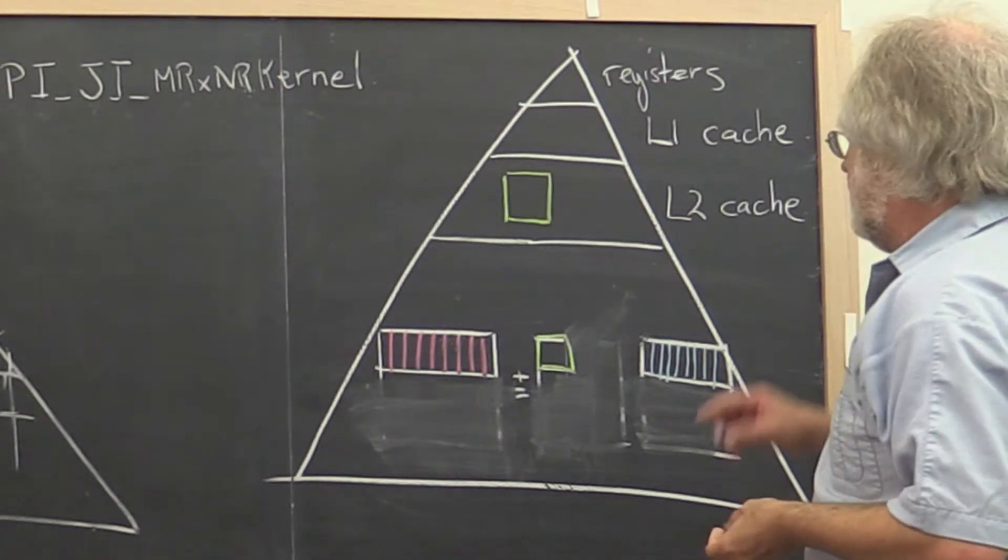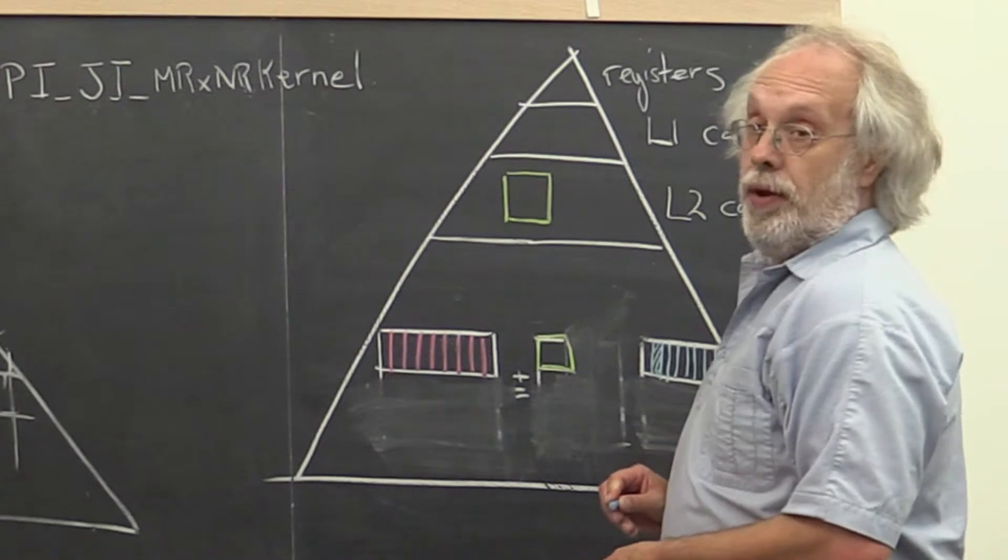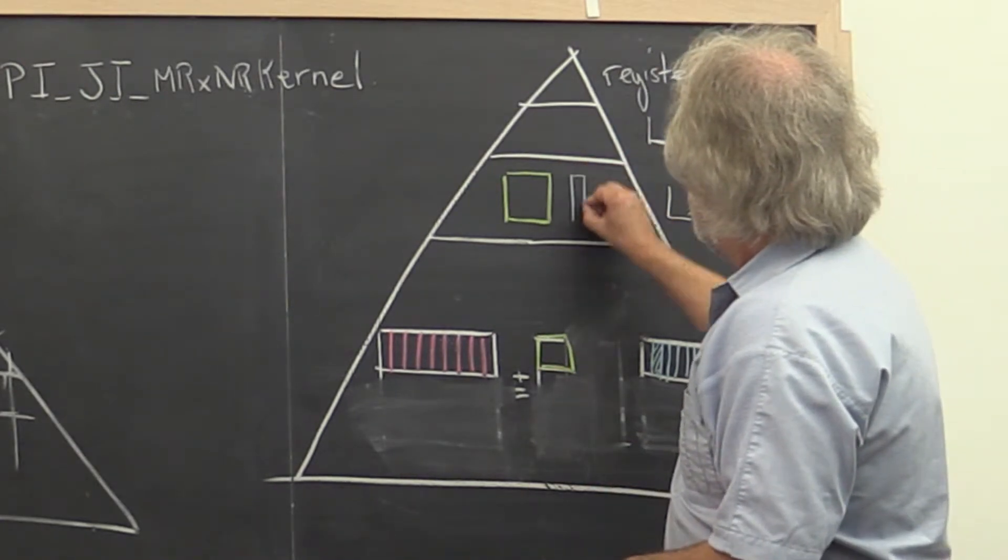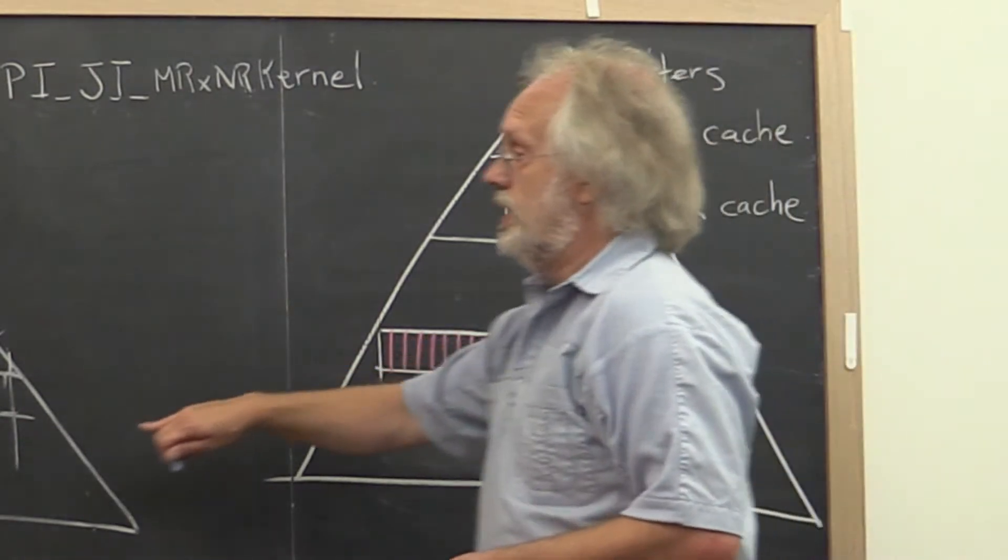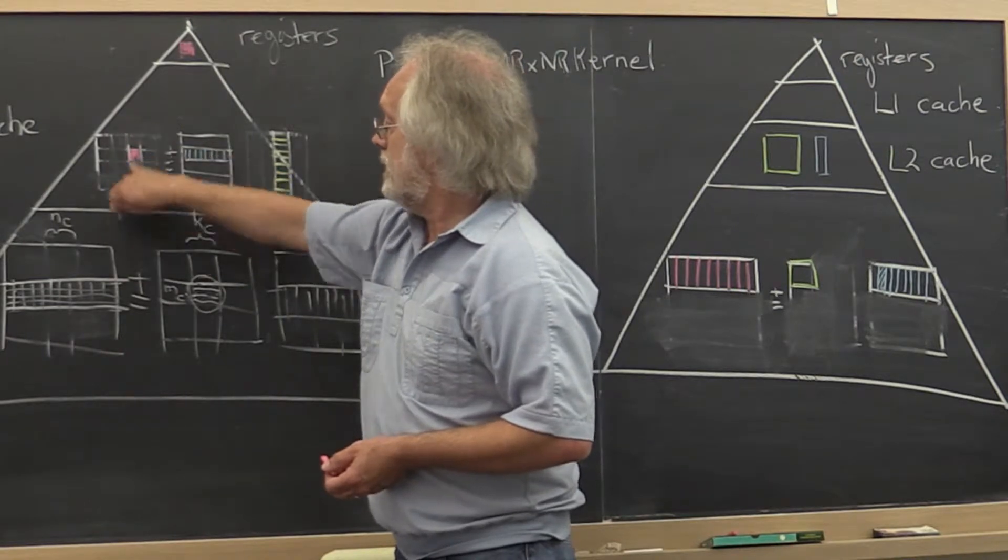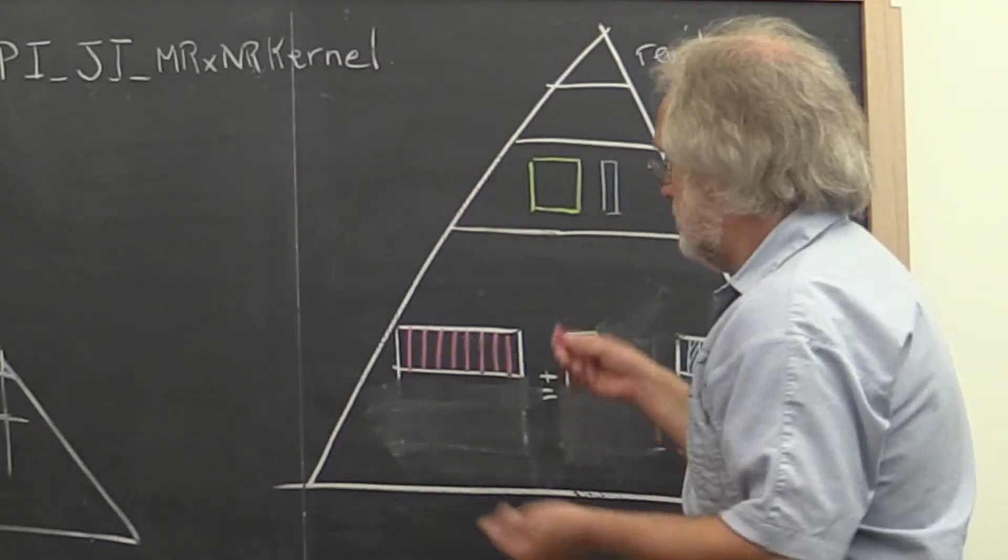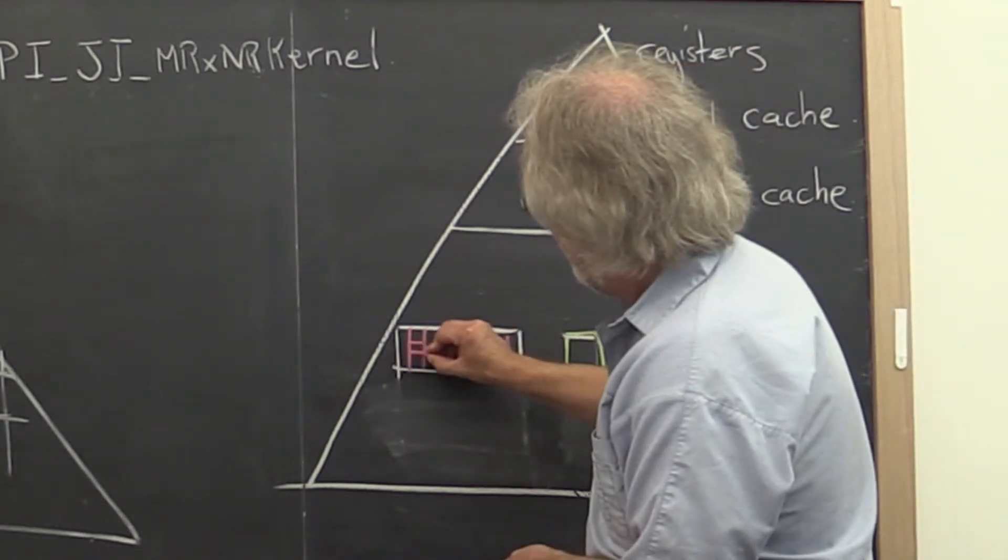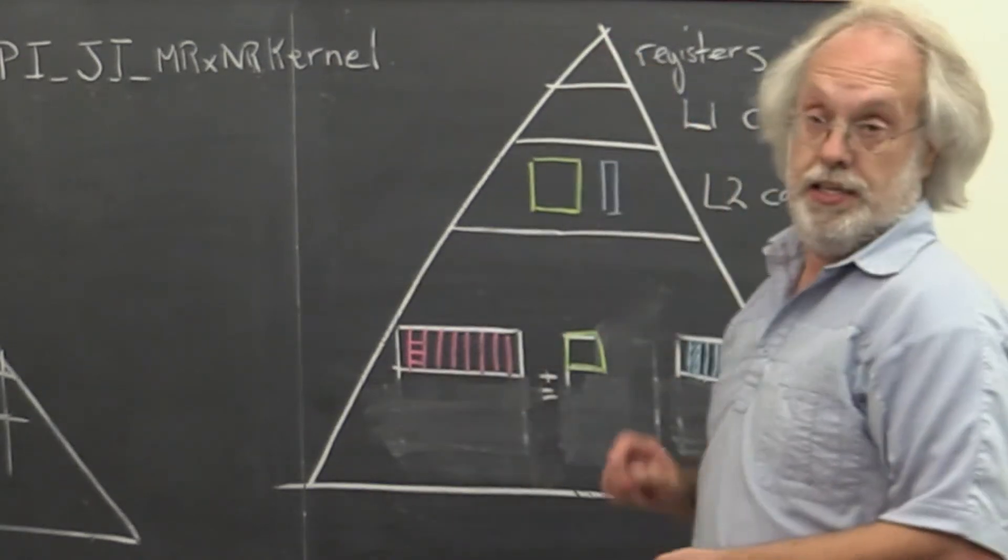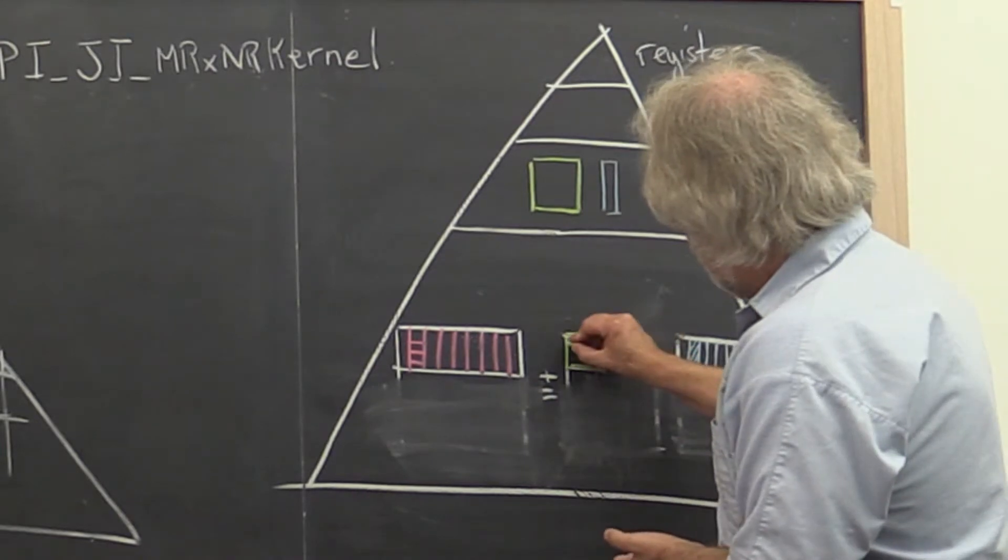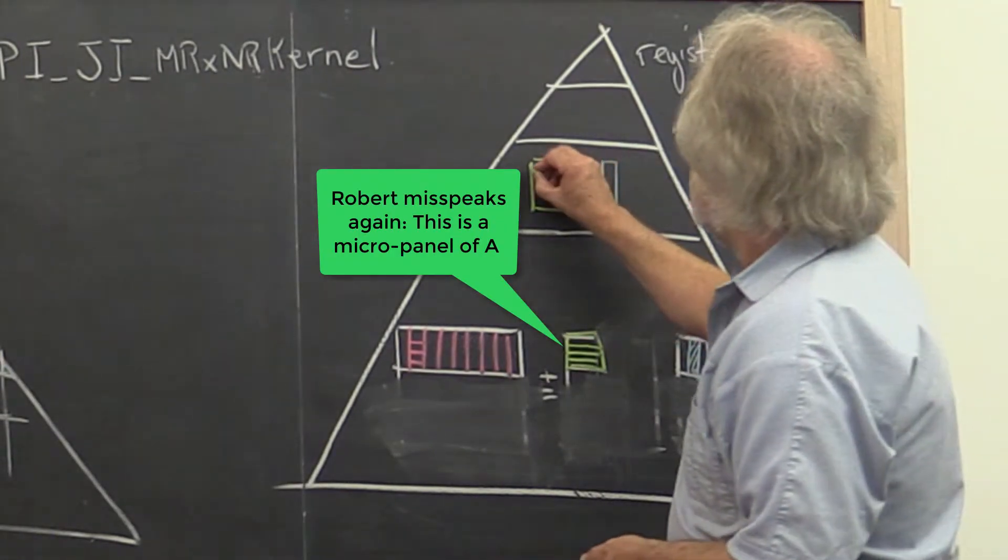What do we do next? Notice that we're going to multiply a typical micropanel of B by the block of A to update the micropanel of C. But the way we do that is by partitioning that micropanel of C, which would reside right here, into microtiles. So now we're going to loop over I. And what that does for a typical micropanel of C is partition that into small blocks, each of which fits in registers. And similarly, it partitions the block of A into microtiles as well.